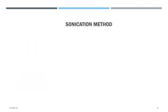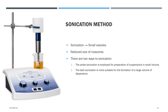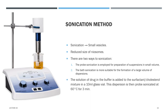Sonication is an effective method for producing small vesicles. High energy provided by sonication can reduce the average size of neosomes. There are two approaches: probe sonication, employed for small volume suspensions, and bath sonication, more suitable for large volume dispersions. The drug in buffer is added to the surfactant and cholesterol mixture in a 10 ml glass vial and the dispersion is probe sonicated at 60°C for approximately three minutes.